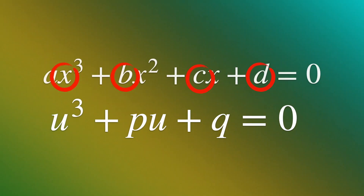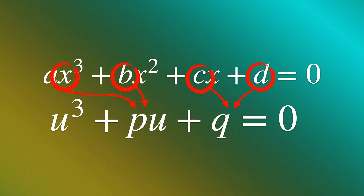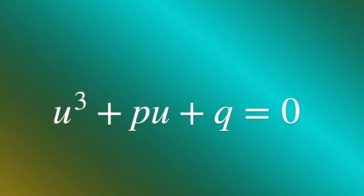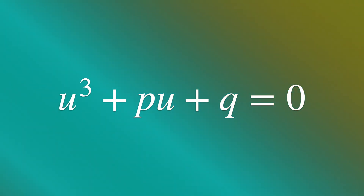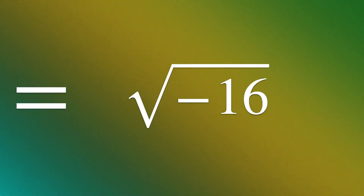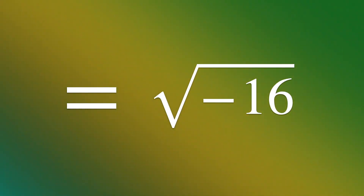The coefficients P and Q in the depressed cubic equation will be expressions involving the original coefficients A, B, C, and D. In his solution, Cardano encountered expressions like the square root of negative 16, which was the beginning of imaginary numbers.